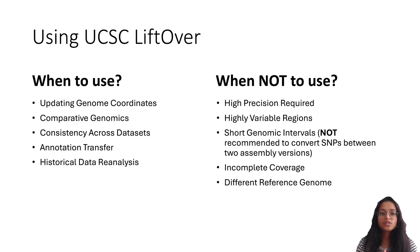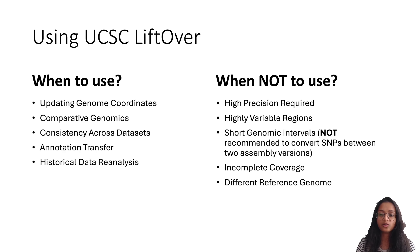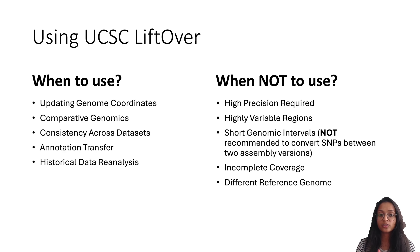LiftOver is not recommended where high precision is required, as some coordinates may not map accurately, leading to inaccuracies. For regions with high genomic variability — such as structural variants, segmental duplications, or regions with many small insertions or deletions — LiftOver might not accurately map these regions. It is also not recommended for mapping SNPs or single nucleotide polymorphisms, where even minor inaccuracies can have significant effects. Instead, UCSC has documented a specific approach for mapping rsIDs from one assembly to another, and I'll link that in the description.